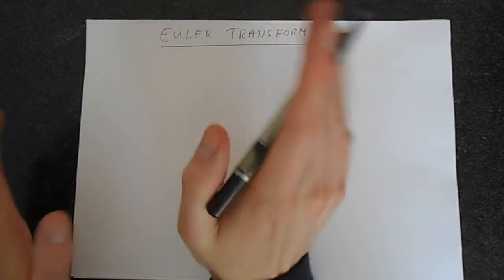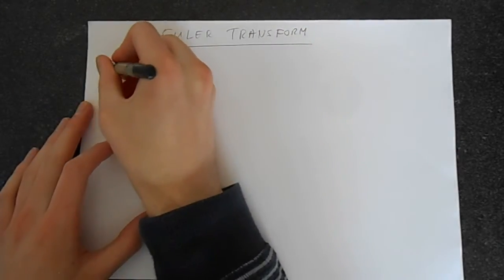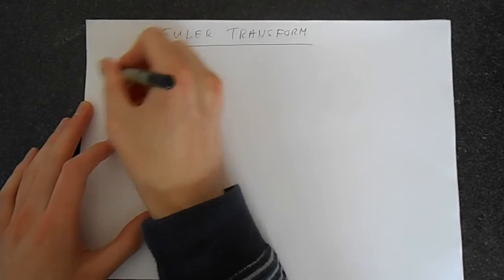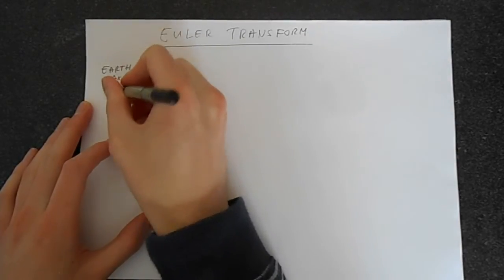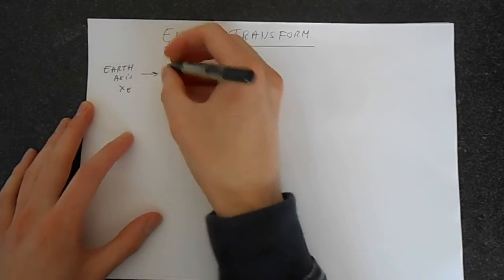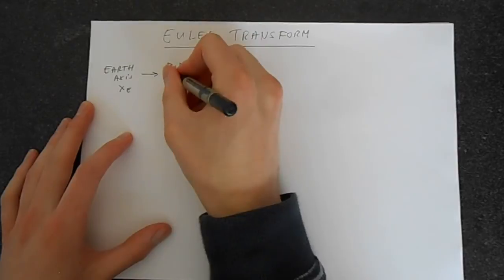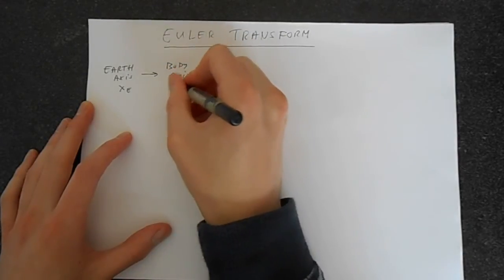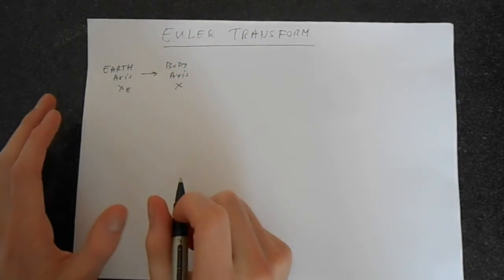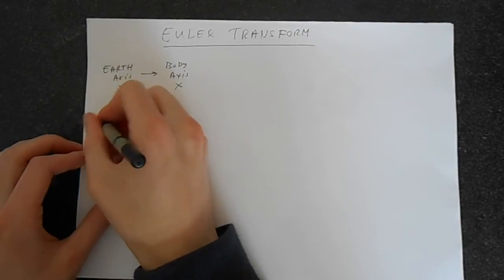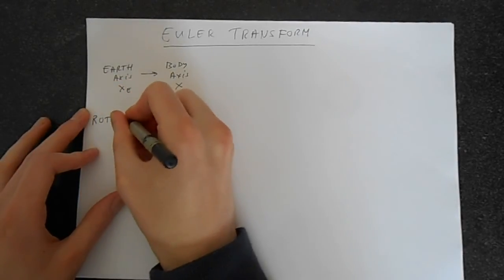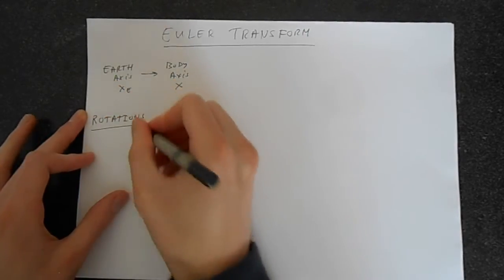So what we're fundamentally doing here is we're taking something in earth axes which we're going to call XE and we're transforming it into body axes so it'll be associated with our aircraft. I'm going to call this X and we do this with a series of rotations and we have to do these rotations in a very specific order.